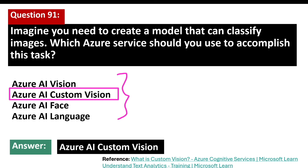Azure AI Custom Vision is an image recognition service provided by Microsoft that allows you to build, train, and deploy your own image classification models. Unlike other Azure services, Custom Vision is specifically designed to help you create models that can recognize and categorize images based on your specifications.